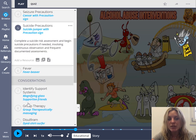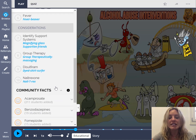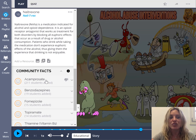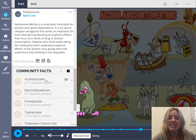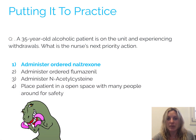Scrolling further, we see seizure precautions and suicide precautions — all really important things to know. Looking at the naltrexone character — the nail T-rex — naltrexone is a medication indicated for alcohol and opioid dependence. If you see that nail T-rex character in the Picmonic, it's going to trigger you to think about administering ordered naltrexone. That is a big hot spot you want to be aware of for the NCLEX.